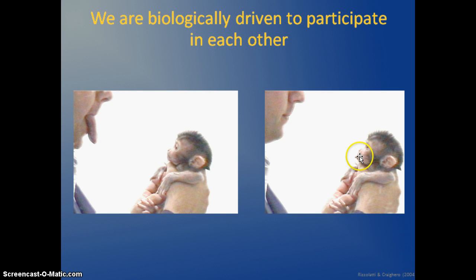They had an EEG cap on the monkey while this was happening. They saw that when the monkey saw the tongue being stuck out — or when the monkey stuck his own tongue out — the same areas of the brain became active. Whether he perceived someone else doing it, or did it himself, the brain was active in a very similar way.